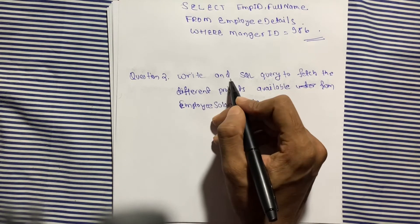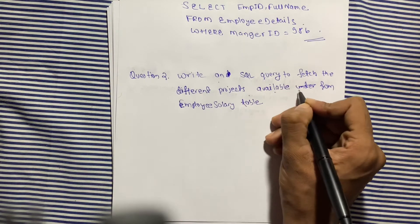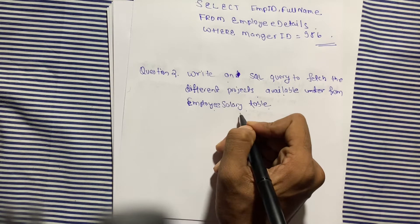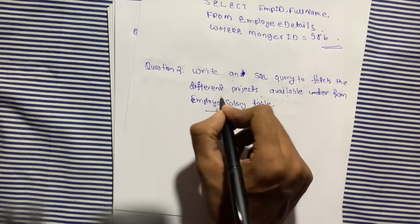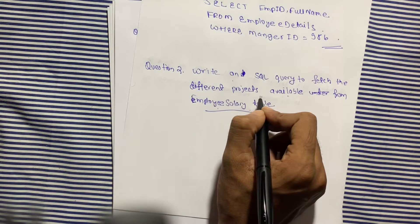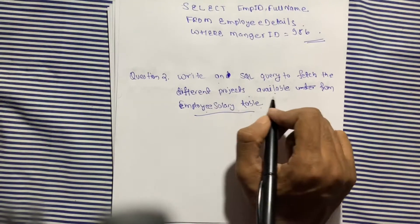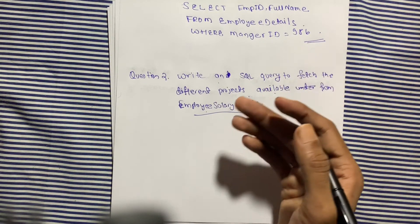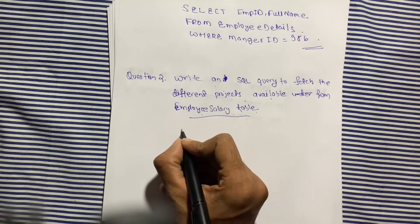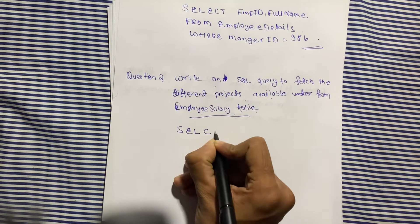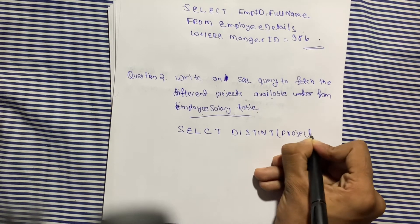The second question is: write an SQL query to fetch the different projects available from the employee salary table. We have to fetch distinct project values — meaning, in the salary table, what are the different project levels available. We can see there are many duplicate project values when selecting.